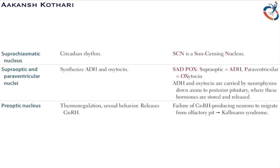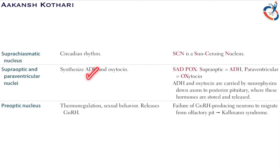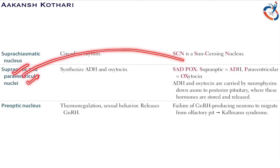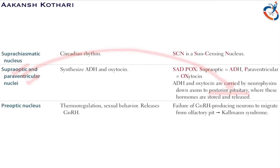The supraoptic and paraventricular nuclei are responsible for the production of hormones released by the posterior pituitary. They synthesize ADH and oxytocin, which are carried by neurophysins down the axons to the posterior pituitary.